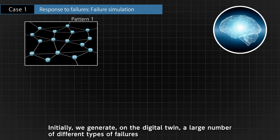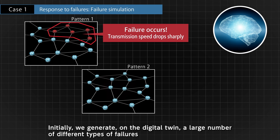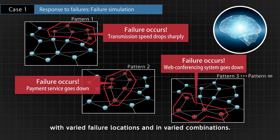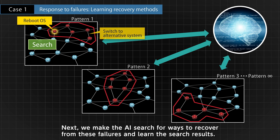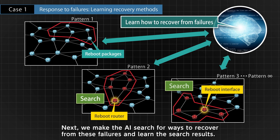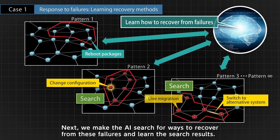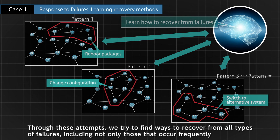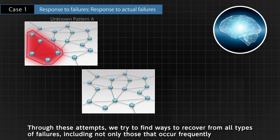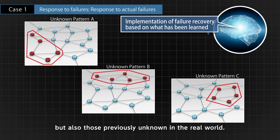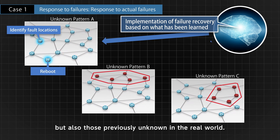Initially, we generate on the digital twin a large number of different types of failures, with varied failure locations and in varied combinations. Next, we make the AI search for ways to recover from these failures and learn the search results. Through these attempts, we try to find ways to recover from all types of failures, including not only those that occur frequently, but also those previously unknown in the real world.